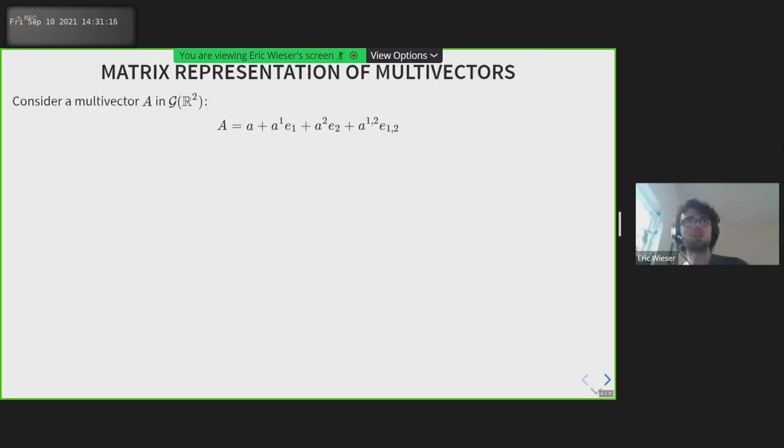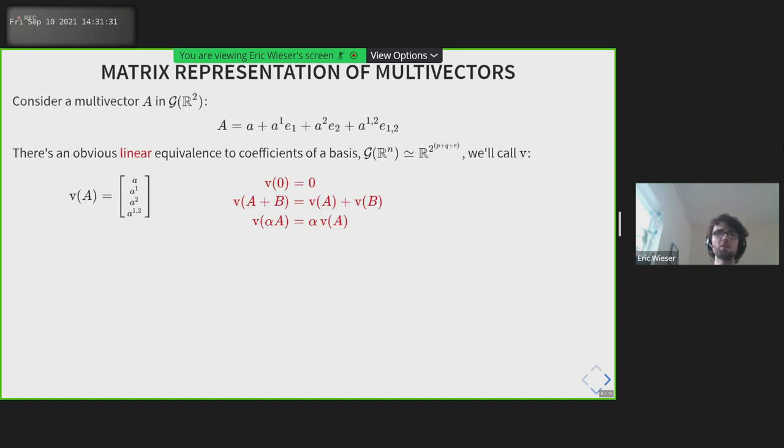So let's look at how we can represent multivectors as matrices. This isn't new, but it's nice to summarize it. We'll use G2 because it's small and we don't need to write many coefficients, and we'll use superscript indices as the coefficients. There's an easy way to convert between a multivector and a vector representation of its coefficients, where you just take all the coefficients and stack them up in a vector. This is a linear equivalence - it preserves zero, addition, and scaling.